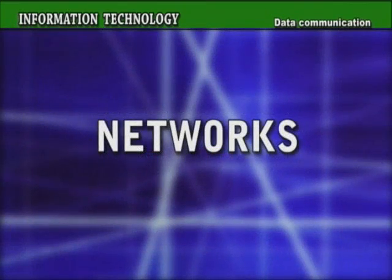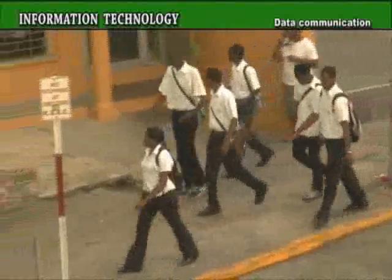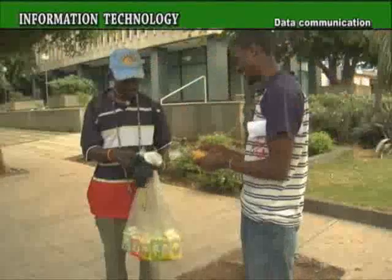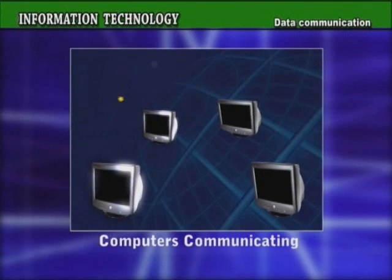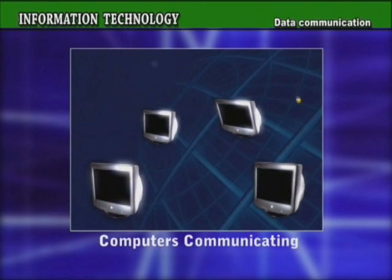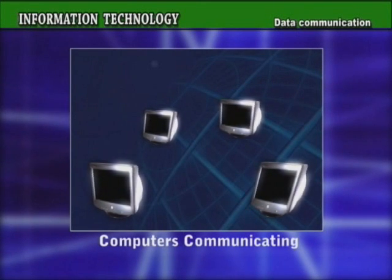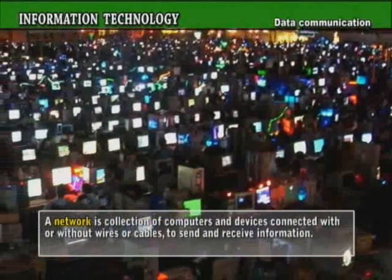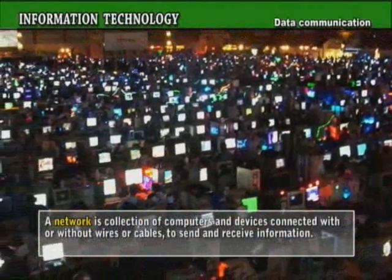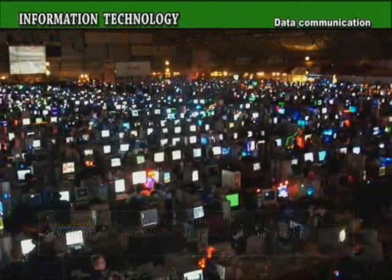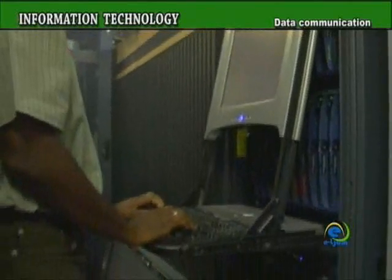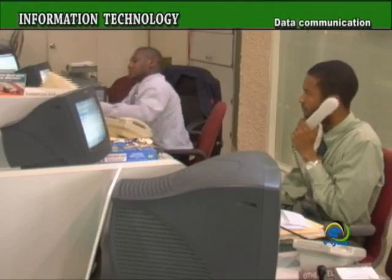Networks. Just as human communication takes place in groups of two or more persons, so does communication among computers. Communication among computers occurs in groups referred to as a network. A network is a collection of computers and devices connected with or without wires or cables to send and receive information. Many businesses network their computers to share hardware, data, information, software, and to communicate.